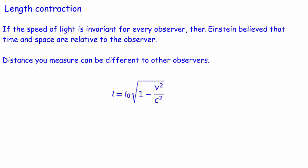Time and space are relative to the observer. It doesn't matter what you're doing — the speed of light is the speed of light compared to you. The distances that you measure can be different to that of other observers. The equation we've got is very similar to that for time dilation, except that the proper length is multiplied by the square root term instead of divided by it.